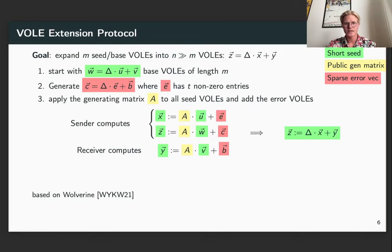Now after all of this is done, the prover and the verifier simply apply the generating matrix to the seed vector OLEs, add the error vector OLEs and out you get a vector X that looks completely uniformly random, and then you simply save M and repeat.